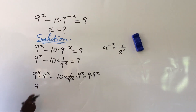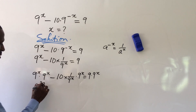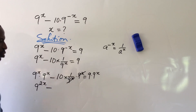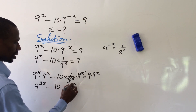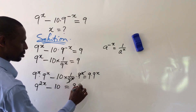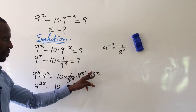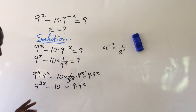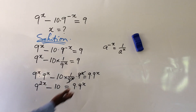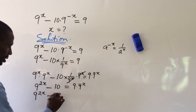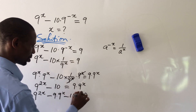According to the law of indices, since the bases are the same we add the exponents — so 9^x times 9^x becomes 9^(2x). The 9 to the power of x in the denominator cancels, leaving us with 10 times 1, which is 10. So we have 9^(2x) minus 10 equal to 9 times 9^x. Moving the 10 to the right-hand side gives us 9^(2x) minus 9 times 9^x minus 10 equals zero.